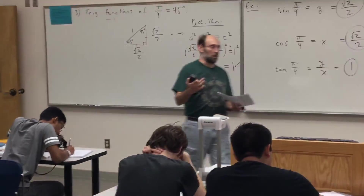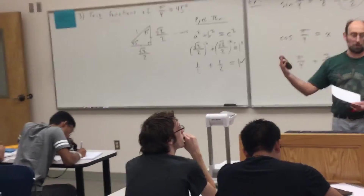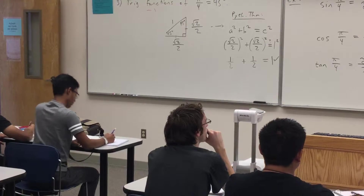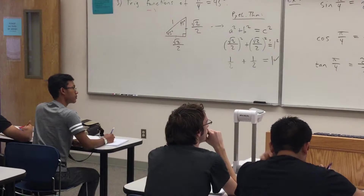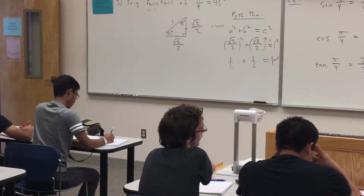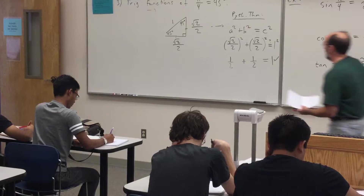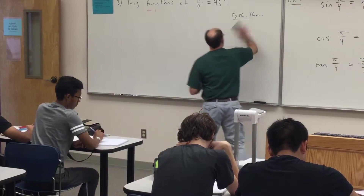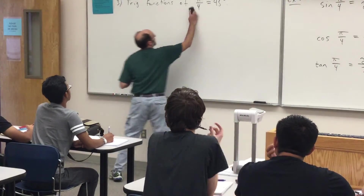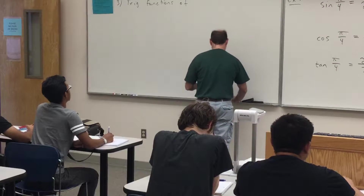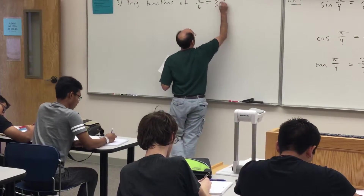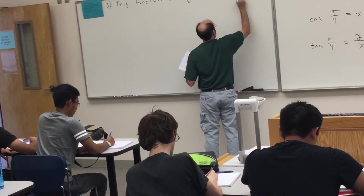Moving on to 30 and 60 degree angles — pi over 6 and pi over 3. We'll do the same approach: represent a 30 degree angle in standard position on the unit circle, get the special triangle that results, find the legs even though the hypotenuse is 1. We have a 30-60-90 triangle, then find the sine and cosine values based on the coordinates of point P.